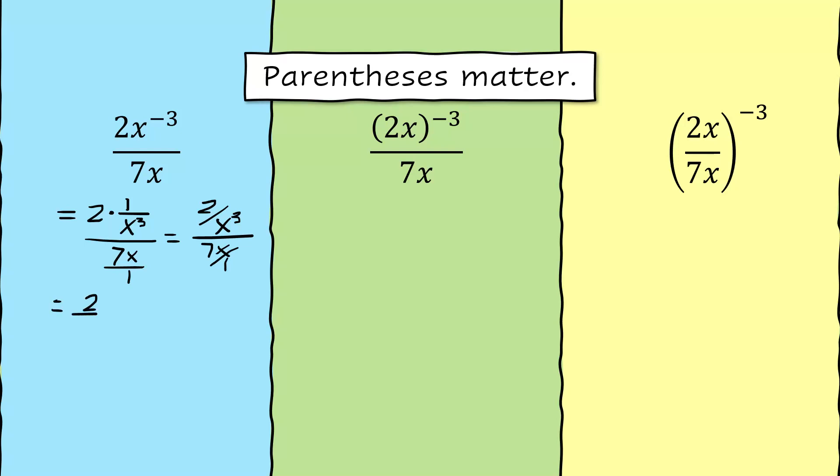When you multiply the 2 times 1 over x cubed, you get 2 over x cubed. We're still being divided by 7x over 1. Changing that division problem into a multiplication problem, we get 2 over x cubed multiplied times 1 over 7x. Multiplying straight across, that's 2 over 7x to the 4th power.